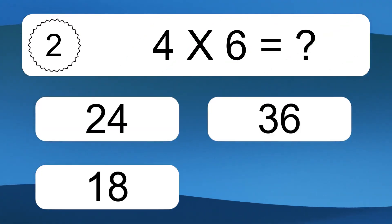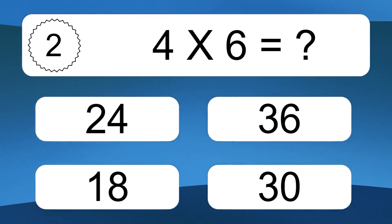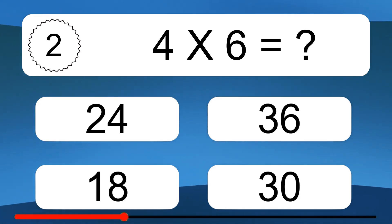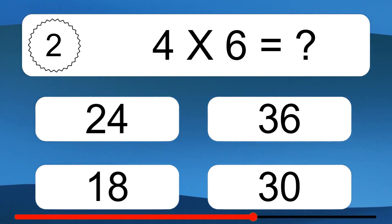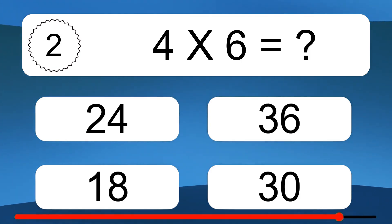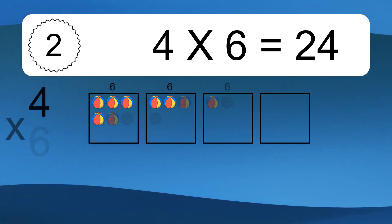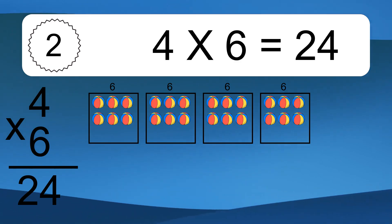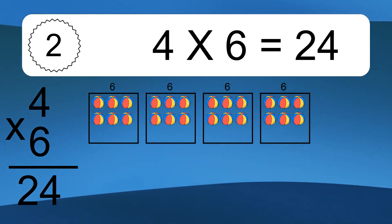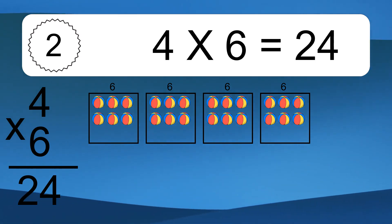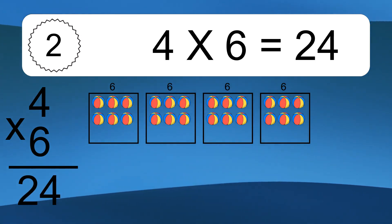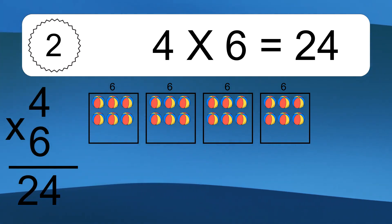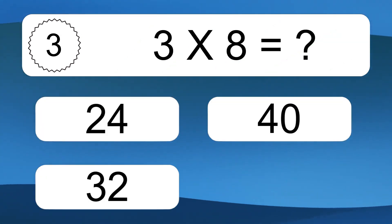4 times 6 equals what? 4 times 6 equals 24. We have 4 boxes, and each box has 6 colorful balls inside. If you count all the balls in all the boxes together, you will have 4 times 6 balls. This equals 24 balls.